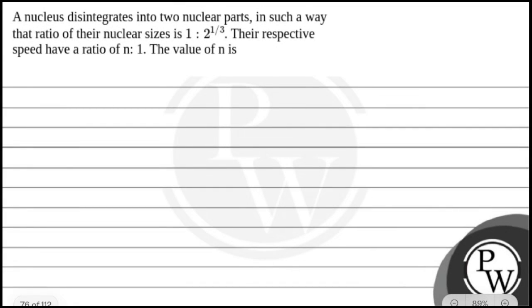Hello, let's read this question. The question says a nucleus disintegrates into two nuclear parts in such a way that the ratio of their nuclear size is 1 is to 2 to the power 1 by 3. Their respective speeds have a ratio of n is to 1. Then the value of n is?